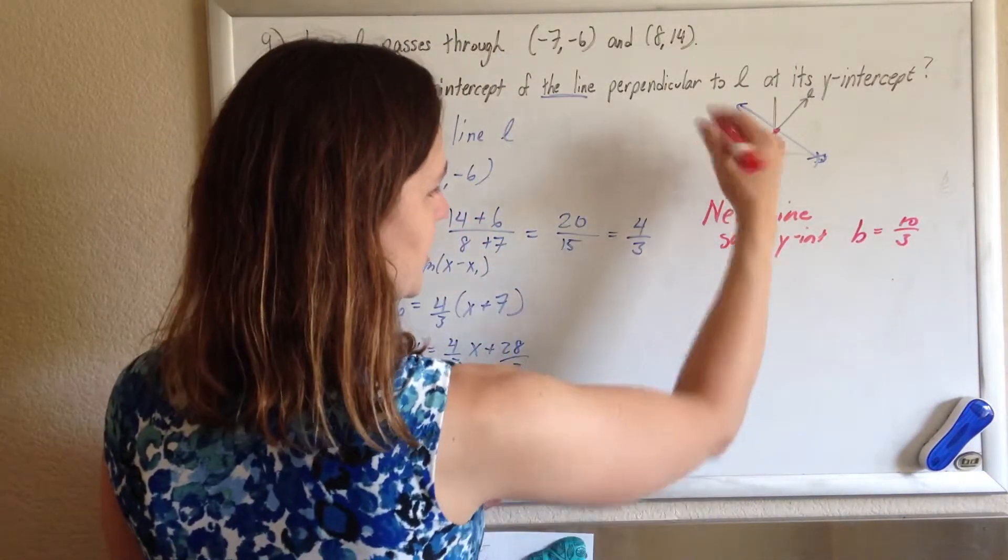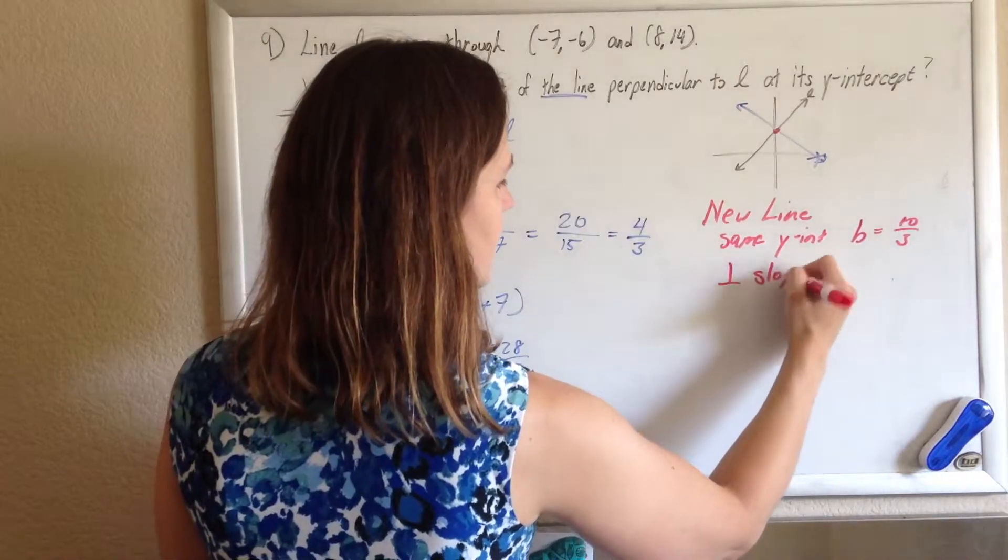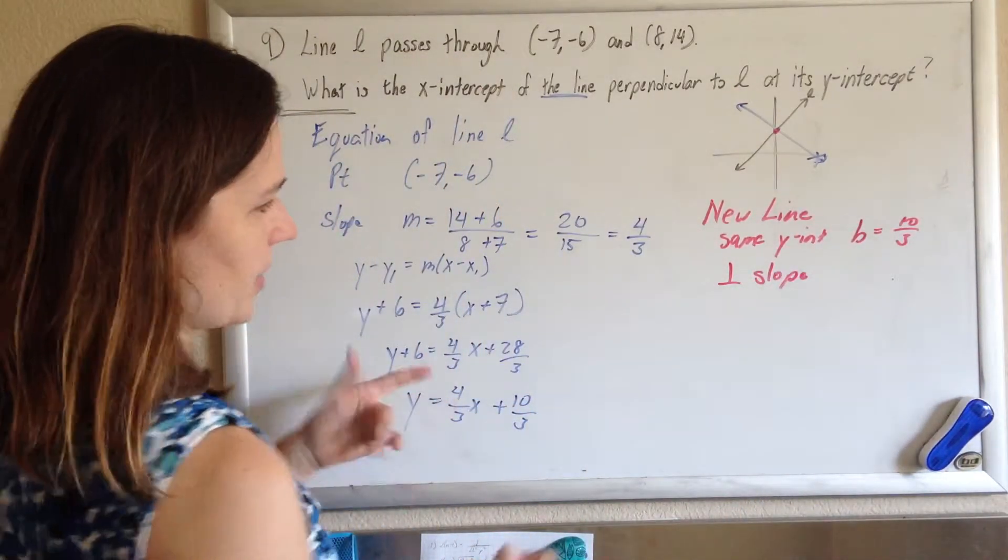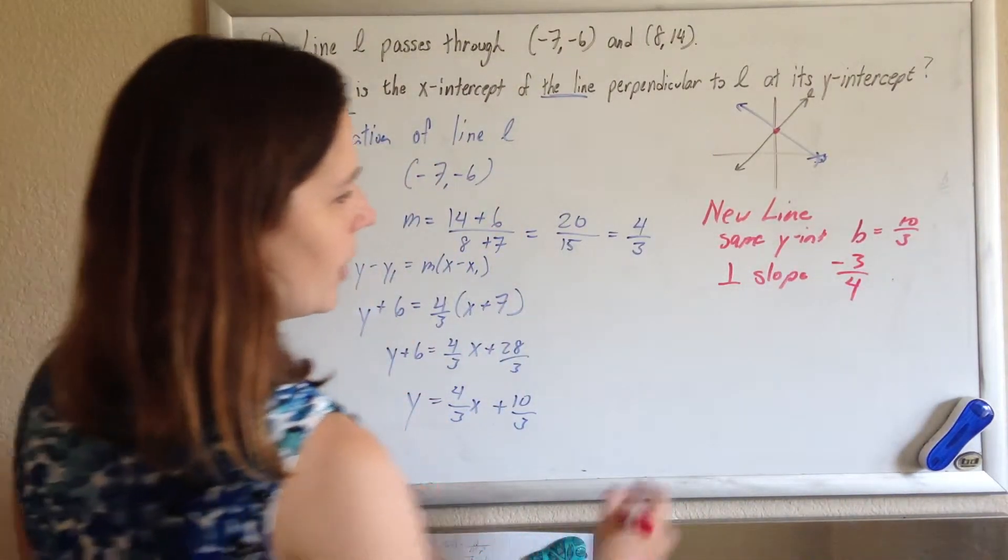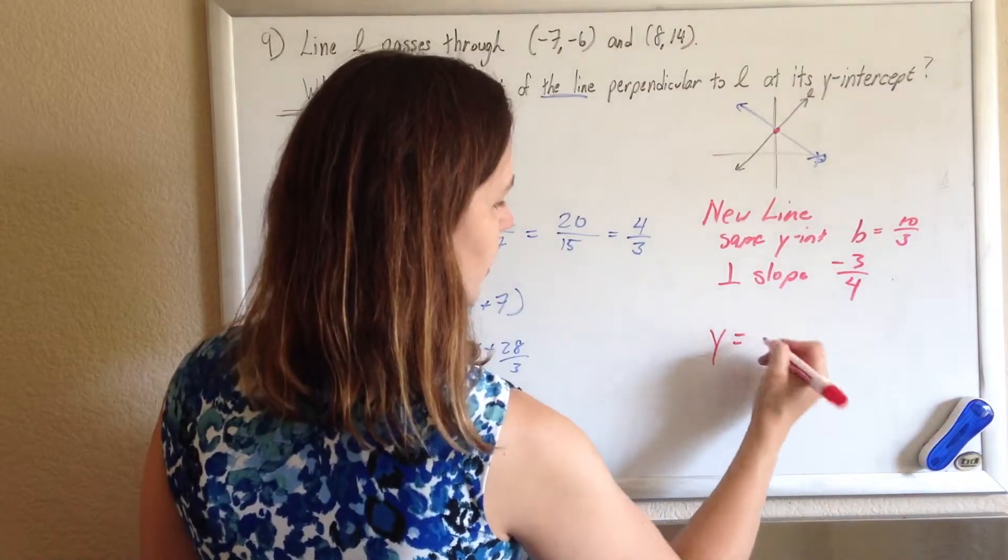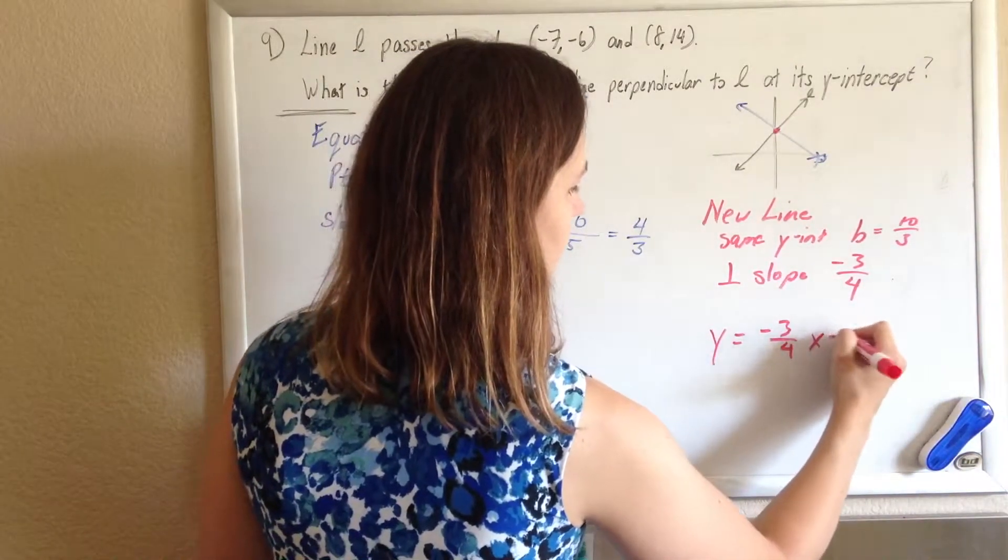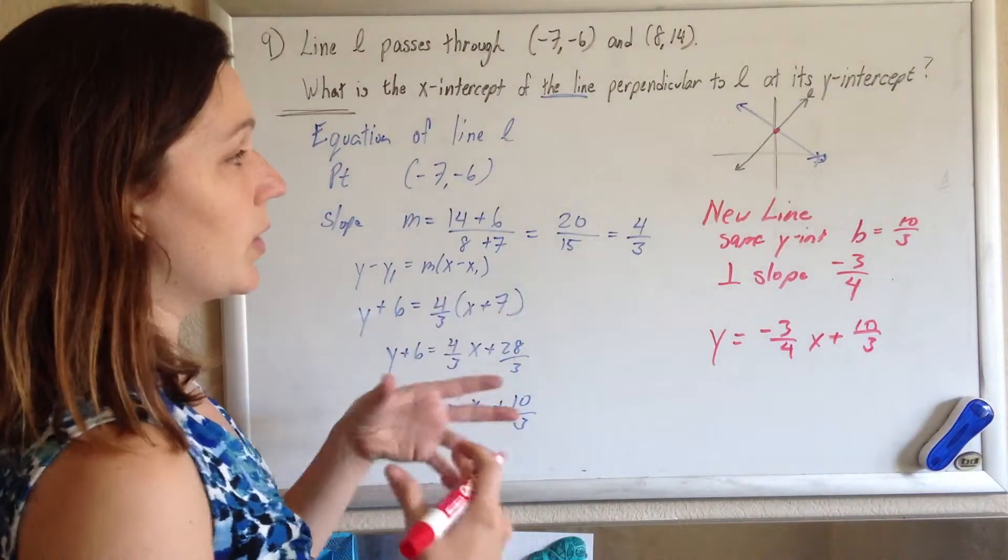and it's perpendicular, so it has the opposite reciprocal slope. If this slope here is 4 thirds, then my slope is negative 3 fourths. Flip it over, make it negative. So I can just do y equals mx plus b, y equals negative 3 fourths x plus 10 thirds, is the equation of my new line.